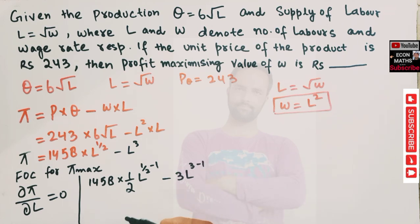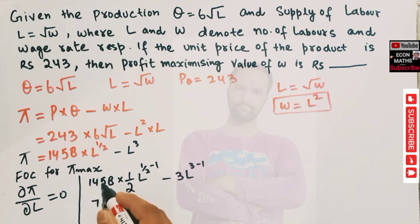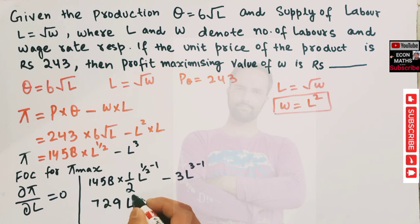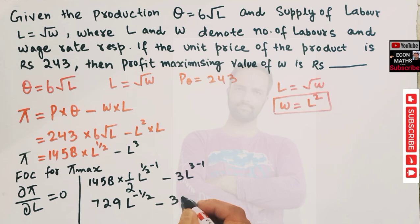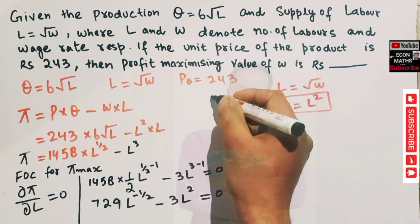So the first order condition gives: 729 × L^(−1/2) − 3L² = 0. Setting this equal to zero.